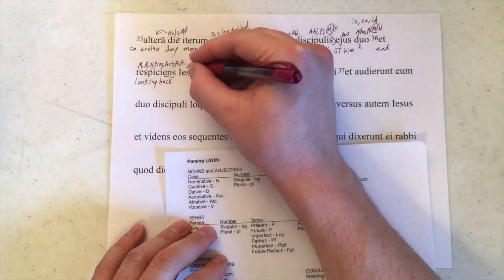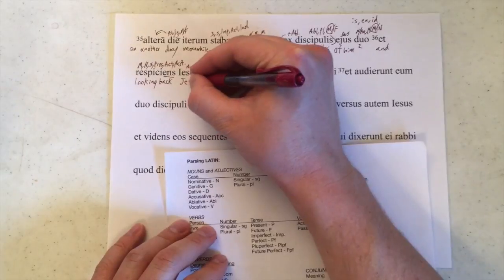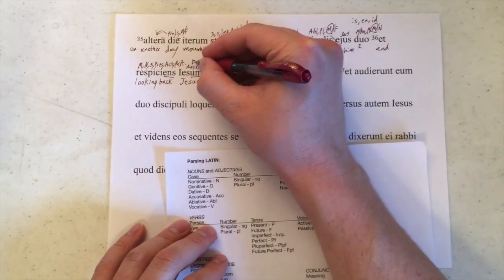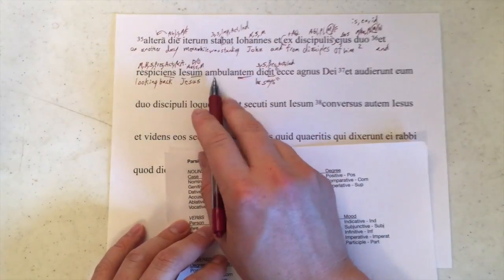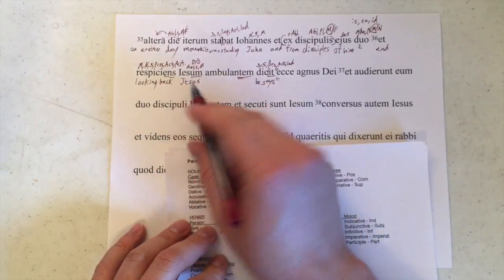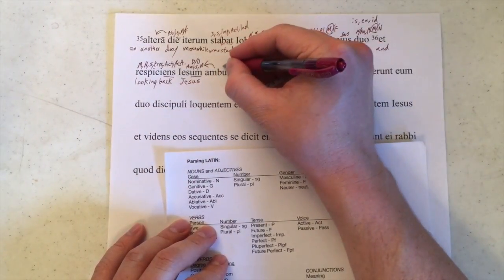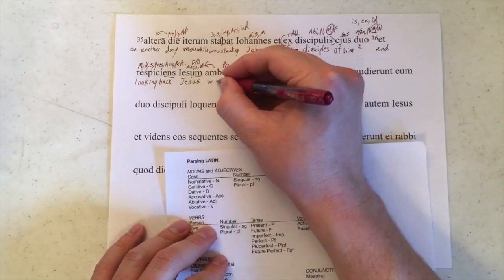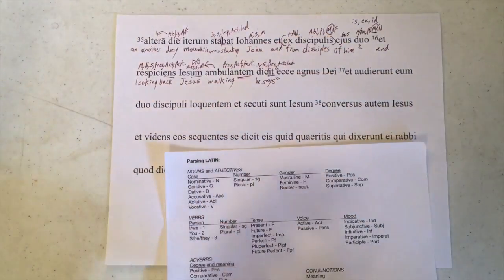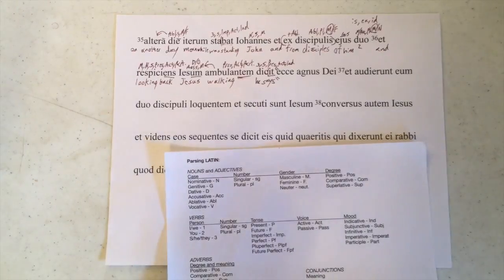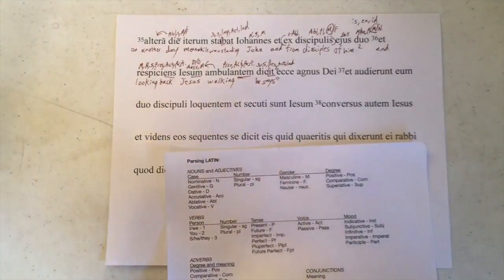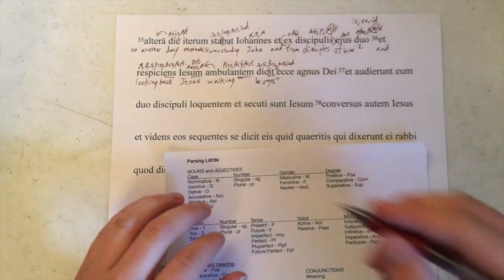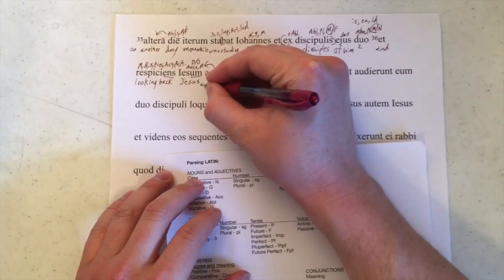Iesum is accusative, singular, masculine — it means Jesus. This is the direct object of the participle right here. Ambulantem is accusative, singular, masculine or feminine. Since Jesus is accusative singular, this is going to be modifying him. It is also present, active, and a participle. We don't have to translate participles just as '-ing.' Sometimes the context allows us to use 'as,' especially when we have participles functioning as adjectives rather than in an ablative absolute. So: 'as he was walking.'